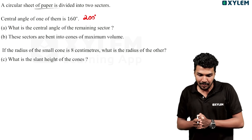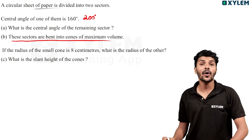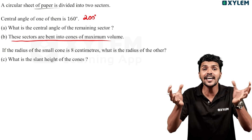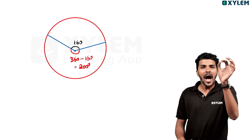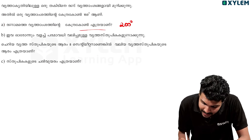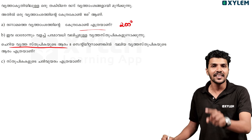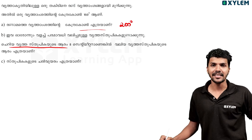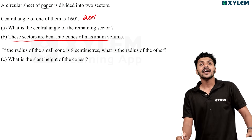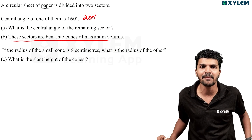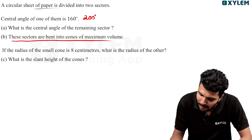This is the big question. These sectors are bent into cones of maximum volume. The two corners are bent. It is 8 centimeters. The corners are bent.